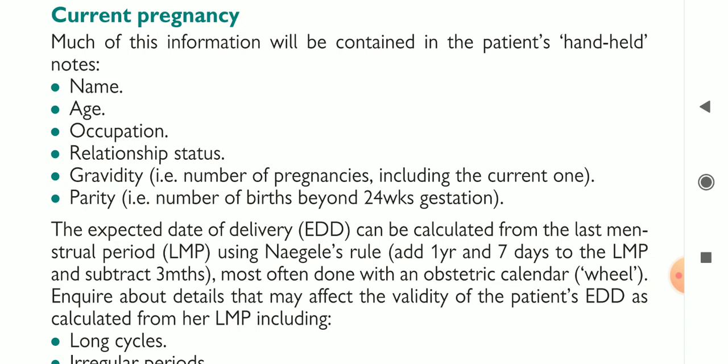When we examine the pregnant lady, information about the current pregnancy is already written on the handheld note — including the name, age, occupation, relationship status, gravidity (number of pregnancies), parity (number of births or babies beyond 24 weeks of gestation), and the expected date of delivery.